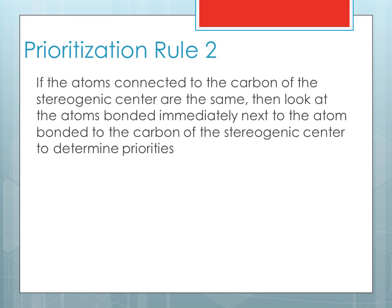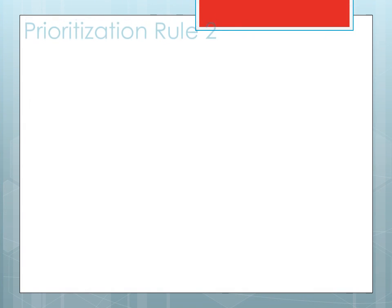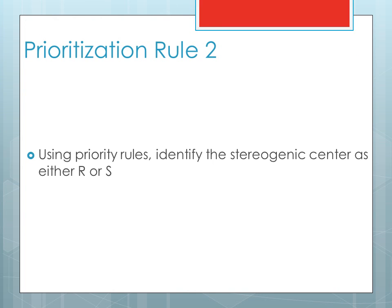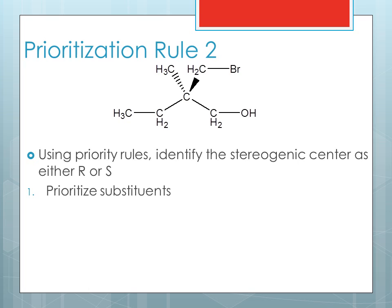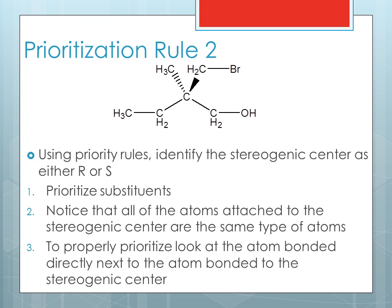The second prioritization rule: if the atoms connected to the carbon of the stereogenic center are the same, then look at the atoms bonded immediately next to the atom bonded to the carbon of the stereogenic center. Here's an example. Using the priority rules, identify this stereogenic center as either R or S. You may notice that all of the atoms attached to the stereogenic center are the same type of atoms — in this case, carbons. To properly prioritize, look at the atoms bonded directly next to the atoms bonded to the stereogenic center. Your priority numbers should look like this, rendering this stereogenic center an R configuration.